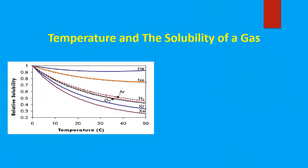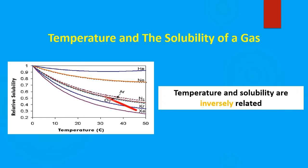So let's look at the effect of temperature on the solubility of a gas. Temperature and the solubility of a gas are inversely related. If you look at this graph here, look at the relative solubility. As you increase temperature, the solubility decreases. But as we decrease the temperature, the solubility increases.